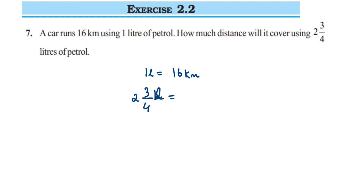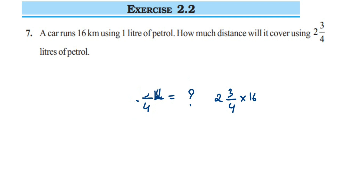The question is: for two and three-quarters liters of petrol, how much distance will it cover? For one liter it is 16 kilometers, so for two and three-quarters it will be two and three-quarters multiplied by 16. Before that, we are going to convert two and three-quarters into an improper fraction and then solve it.